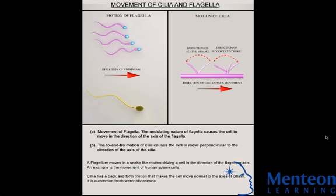A flagellum is a lash-like appendage that protrudes from the cell body of certain prokaryotic and eukaryotic cells. The word flagellum is the Latin word for whip. The main role of the flagellum is locomotion, but it also has function as a sensory organelle, being sensitive to chemicals and temperatures outside the cell. Flagella are organelles defined by function rather than structure.